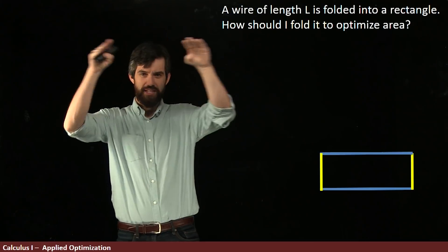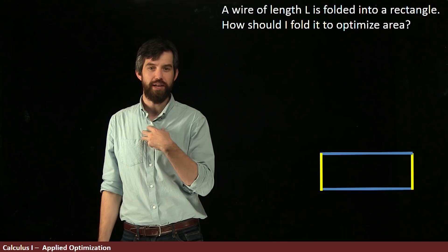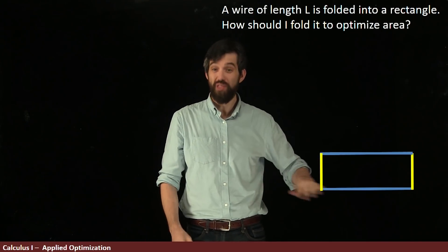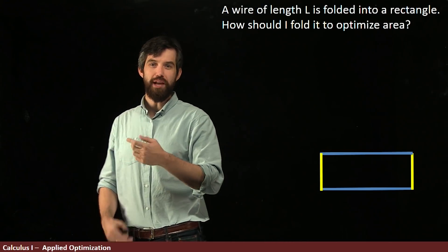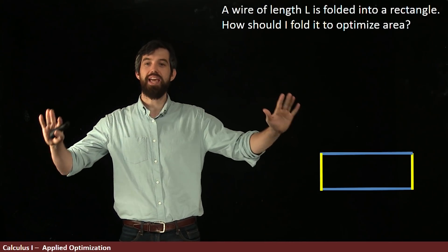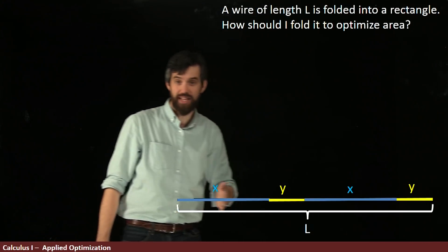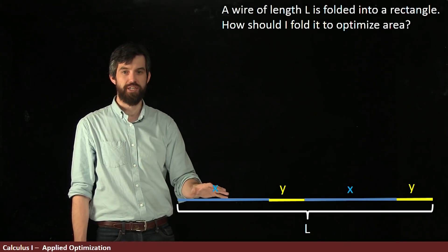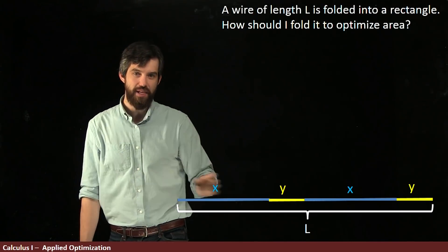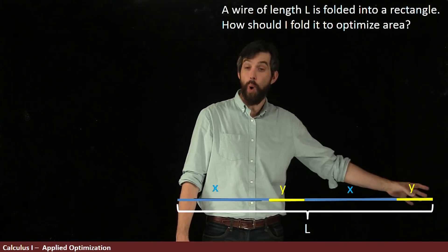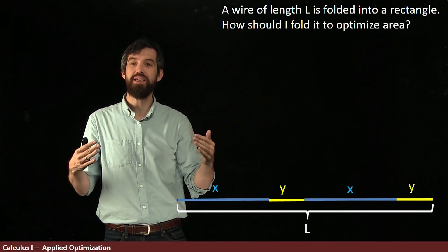If I'm thinking about this wire and trying to figure out where to fold it, I notice there's a top and a bottom — they're the same length — and there's two sides, also the same length. So if the entire wire has a length L, I can break it up as follows: the two blue portions (the bottom and the top) are the same length, which I'll call X. And the two yellow portions — the sides of my rectangle when I fold it up — I'll call Y.